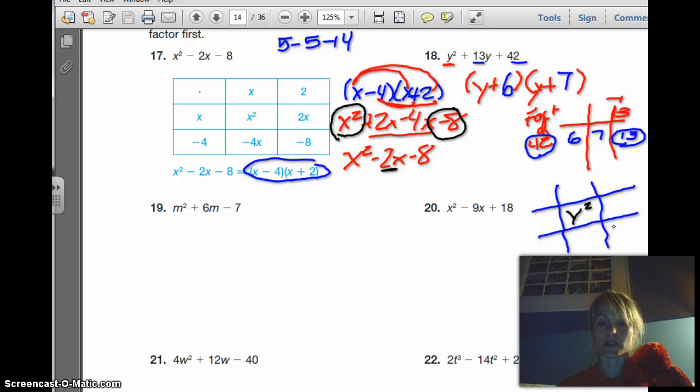So the factored form must be y plus 6 and y plus 7. So if I want to check, y times y is y squared. 6 times 7 is 42. When I do the middle terms, I'll have 6y and 7y, and that'll add to 13. Now there's a few of you that like the box method, and they have an example of that here. And we can still do box method with this, if you like the box method.